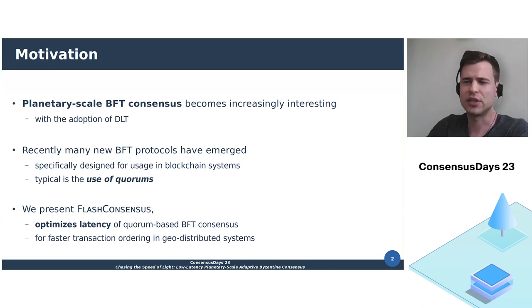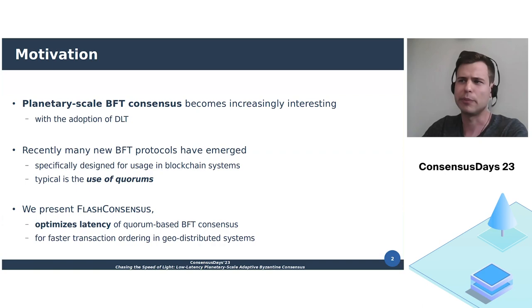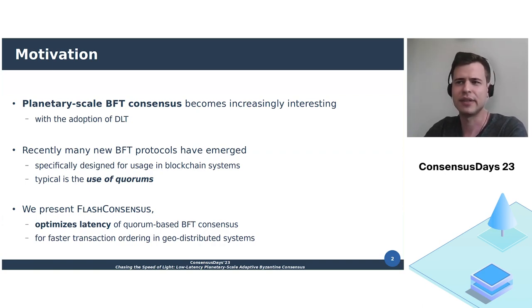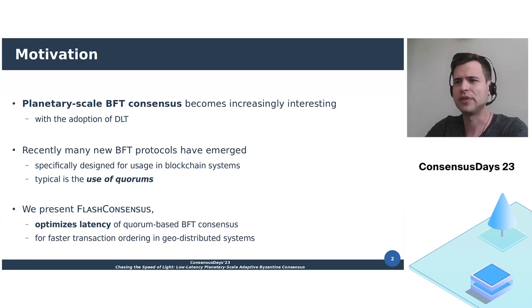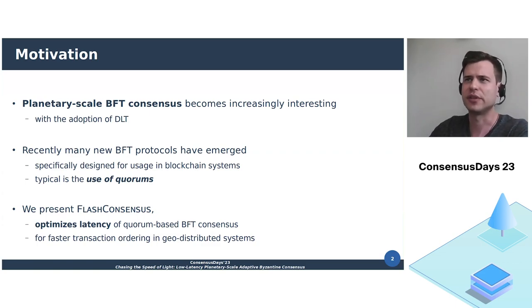In this presentation, I will introduce Flash Consensus, a novel transformation that optimizes the latency of quorum-based BFT consensus protocols to allow for faster transaction ordering in geo-distributed systems.